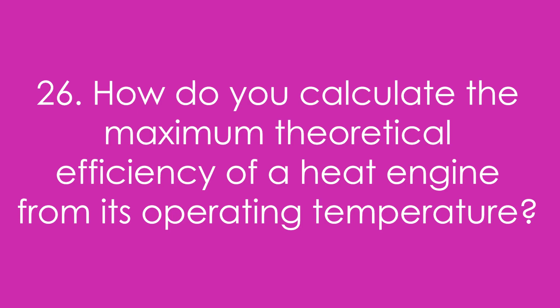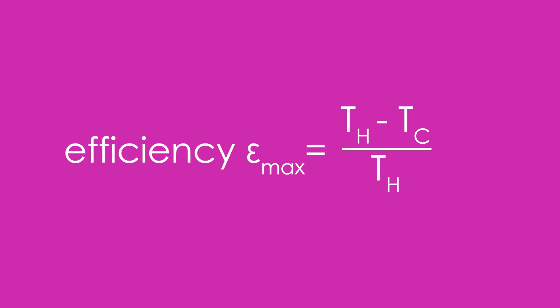Question 26: How do you calculate the maximum theoretical efficiency of a heat engine from its operating temperatures? Efficiency — we might give it the symbol epsilon — equals the difference in temperatures of the hot and cold space divided by the temperature of the hot space. And yes, you can replace those with heats instead.